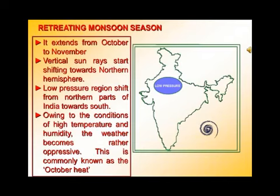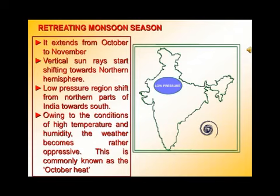The low pressure areas that earlier lay in the north plains of India shift towards south India. During the retreating monsoon season there is one major feature called October Heat. As the name indicates, during the month of October — mainly in north India — there is high temperature and more humidity. Due to this high temperature and humidity the weather conditions become very oppressive, and such a weather condition is known as October Heat.